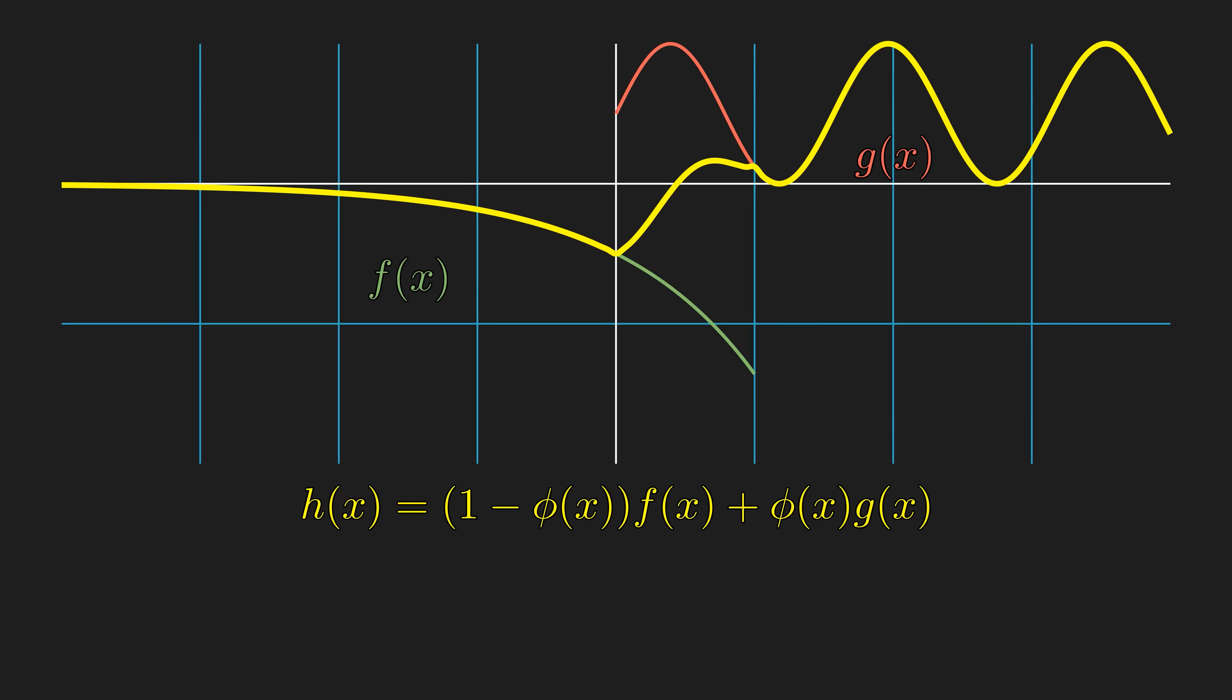Now, we have all the tools to justify that the smoothness of h depends on the smoothness of the step function. Since h can be written as sums and products of f, g, and phi, h is only smooth as the least smooth of the three. And if phi is smooth, then h is smooth as well. Now, we want to construct a step function that is smooth.